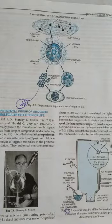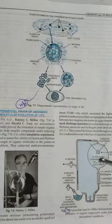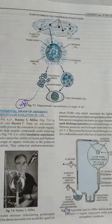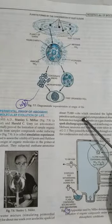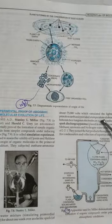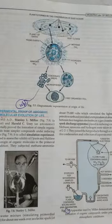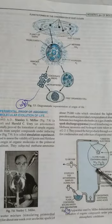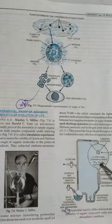So he made an experiment and did spark discharge apparatus at 800 degrees centigrade and voltage was 7500 volts like lightning of the primitive atmosphere. And methane, ammonia, water, hydrogen were present in the spark flask.